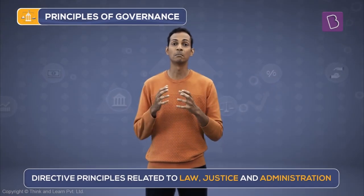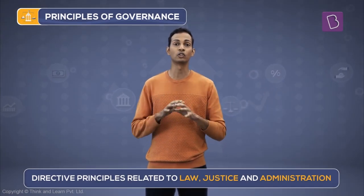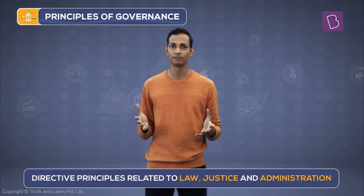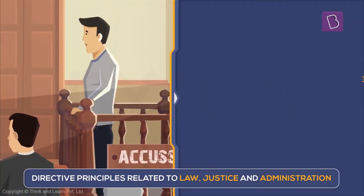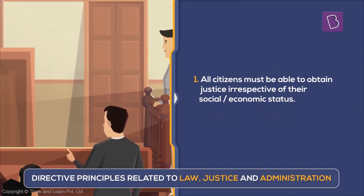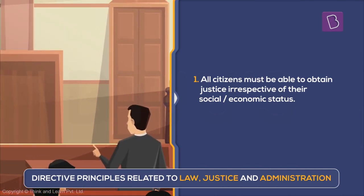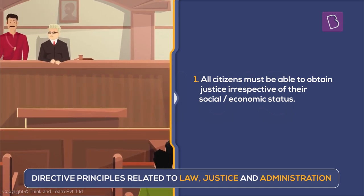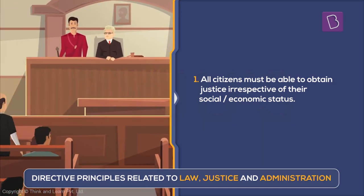The legal system must promote justice on the basis of equal opportunity. This means that all citizens must get a chance to obtain justice, irrespective of which section of society they are from. This principle tries to minimize the denial of justice that is fueled by discrimination of any kind.